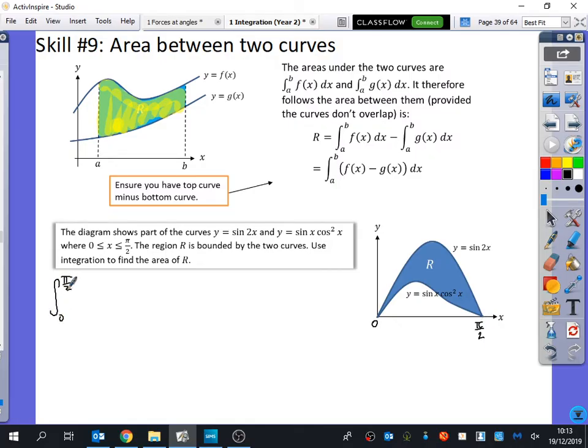We're going to integrate between 0 and π over 2. Which function is on top? So we get sin(2x) and because we're going to take away the bottom one, which is minus sin(x)cos²(x). We're going to do that as one single bit of integration because we can just do it as one single bit of integration if we wanted to. There's many, many approaches you can do to this particular bit of integration.